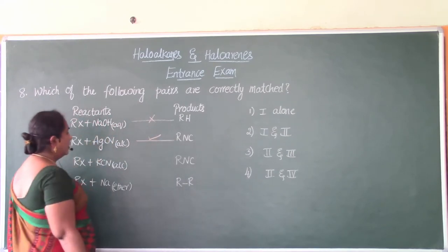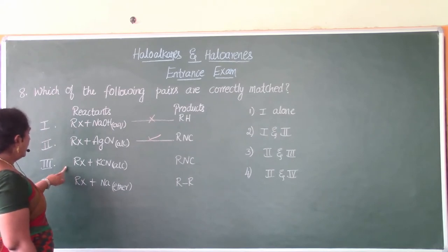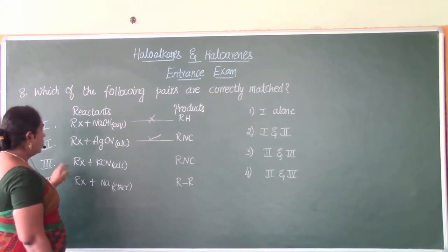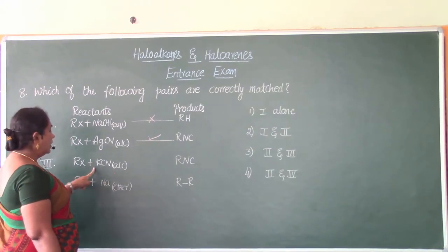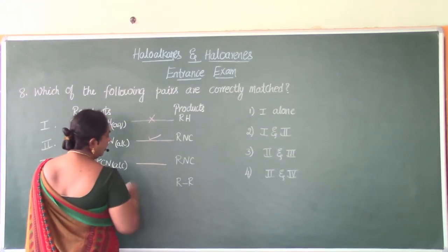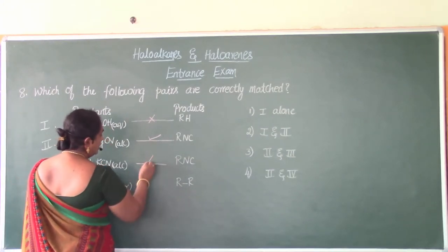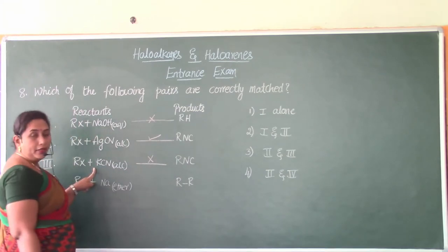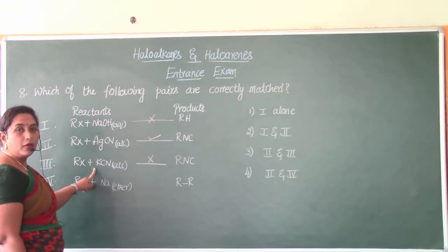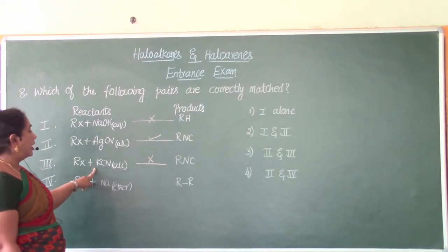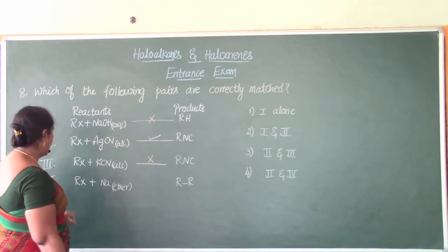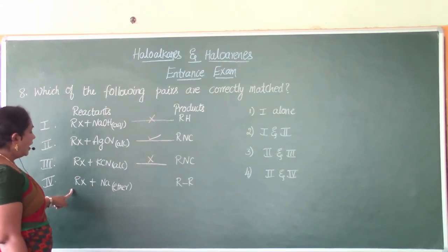The next one, haloalkanes along with alcoholic KCN, potassium cyanide, will it form alkyl isocyanide? No, they will form nitriles. It will not form isocyanide, instead it will form nitriles or the cyanides. Then the haloalkanes when treated with sodium in dry ether, it will form higher alkane. Yes, this is correctly matched.